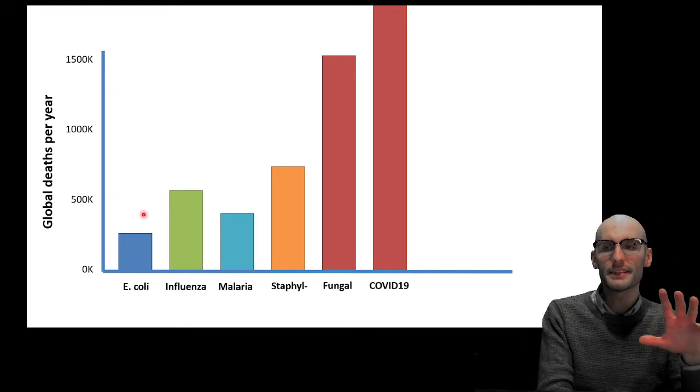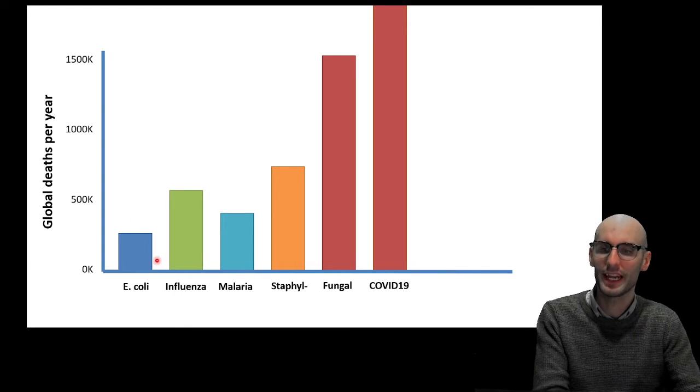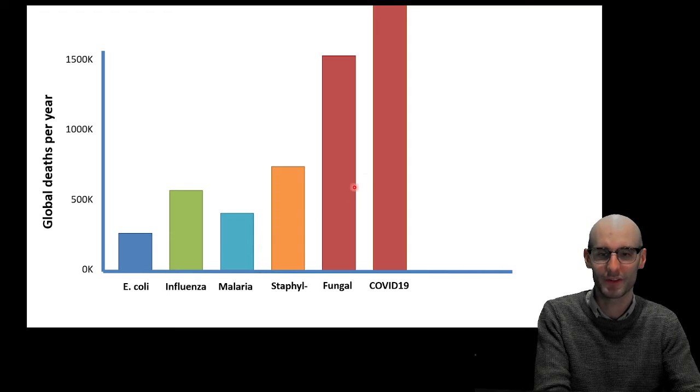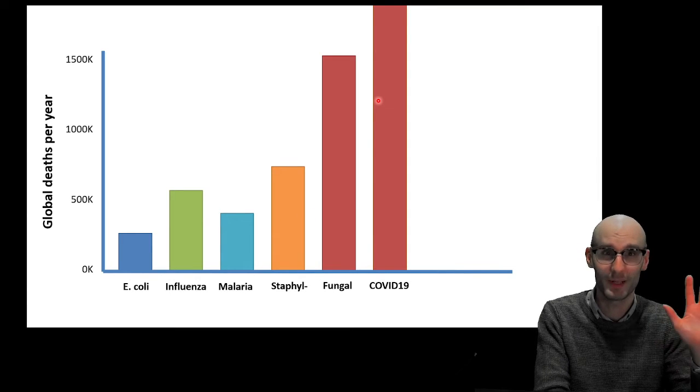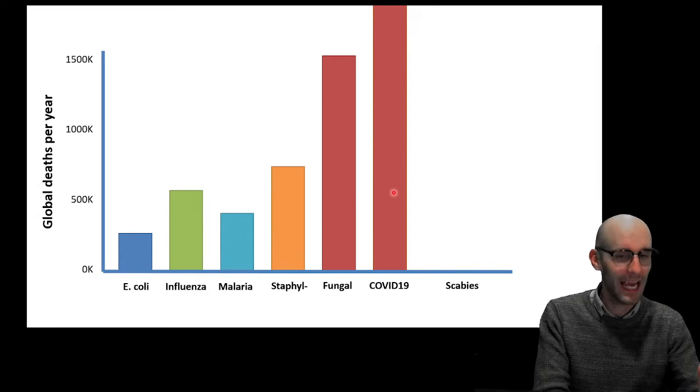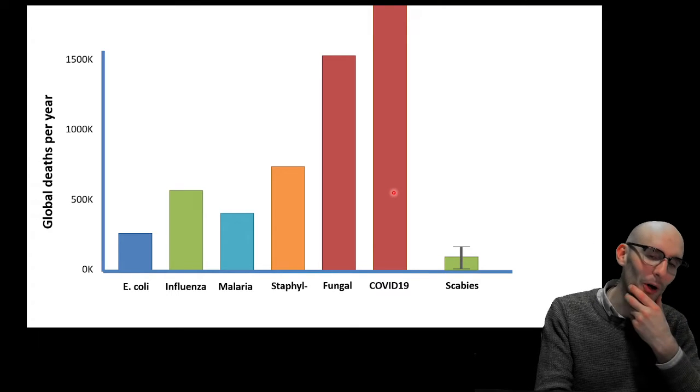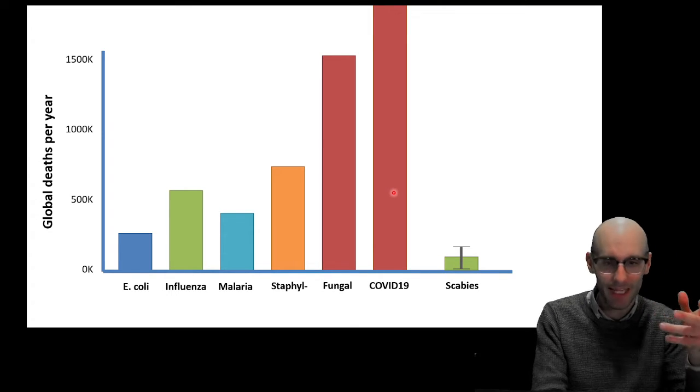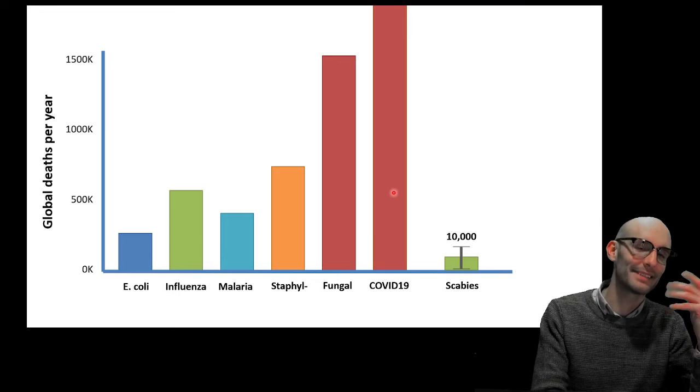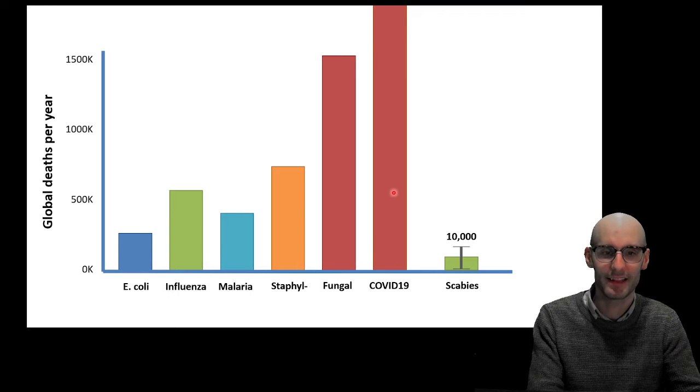All right, so where does it sit on this global deaths per year graph that I've been showing? E. coli, influenza, malaria, staphylococcus, fungus, COVID-19, 4 million in one year. Scabies, where does it sit? Well, again, the error bars are massive on this, and some estimates put it at around 10,000.